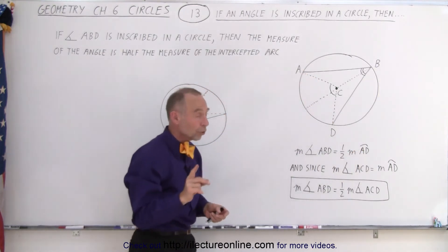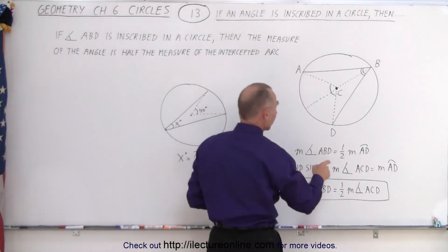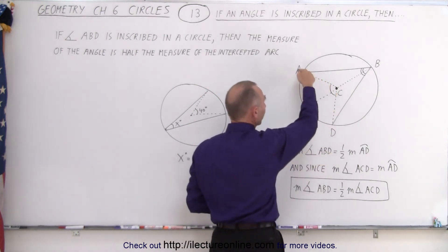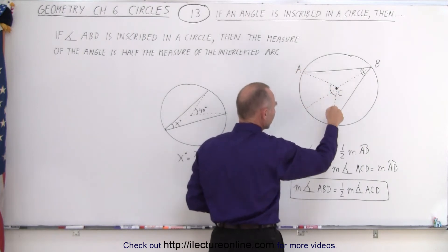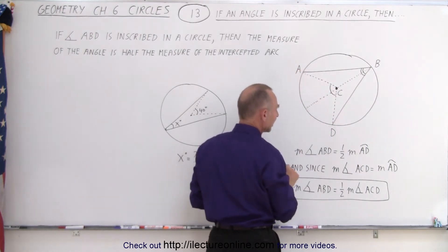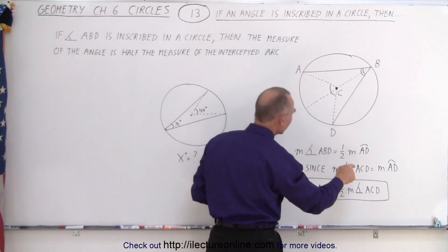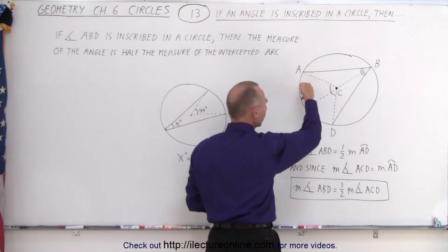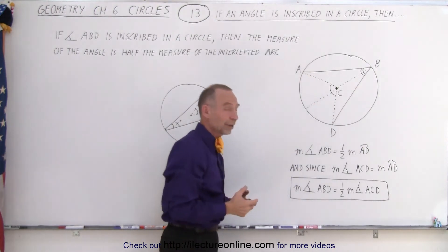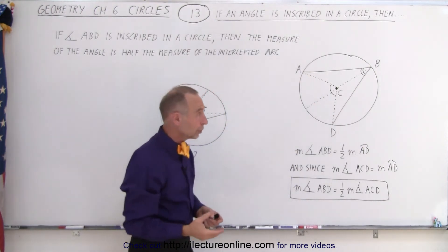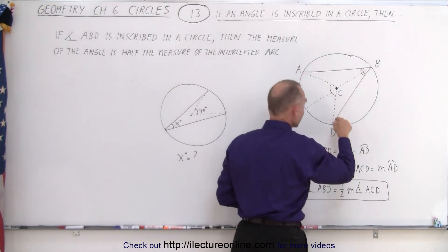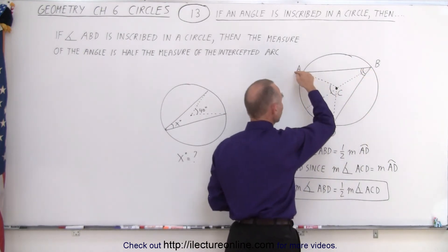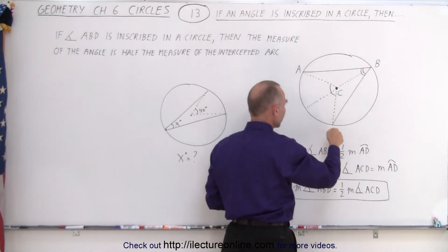We also know that the measure of this angle, where the corner is at the center of the circle — the measure from A to C to D — that measure is equal to the measure of the intercepted arc. So therefore, we can conclude that the measure of angle ABD must be half the measure of angle ACD.